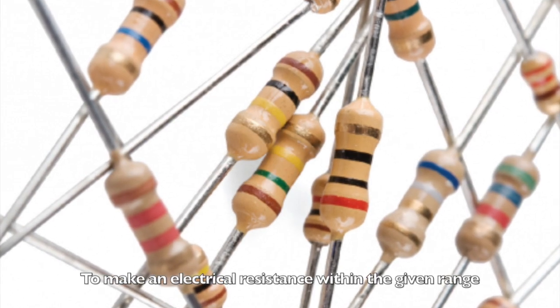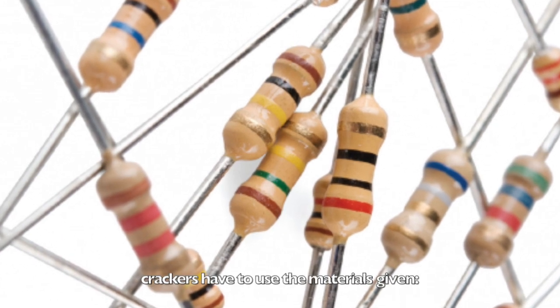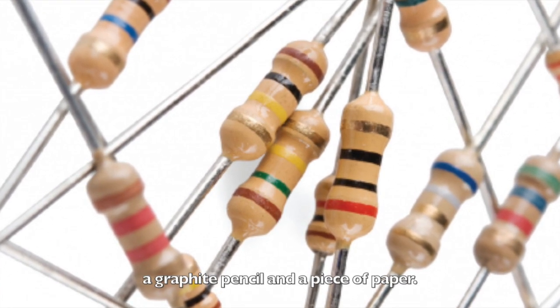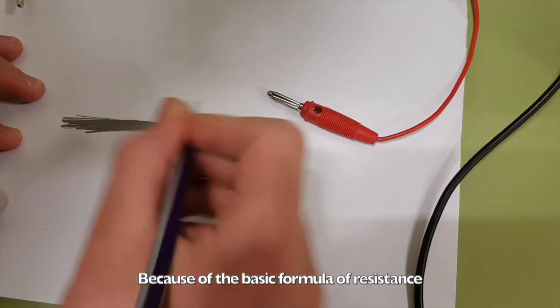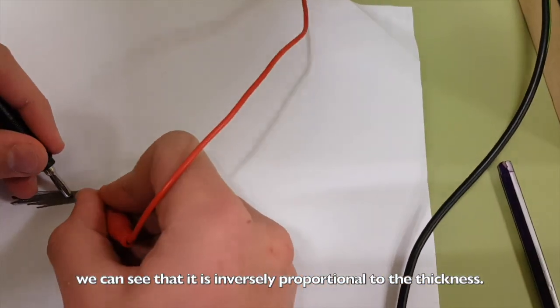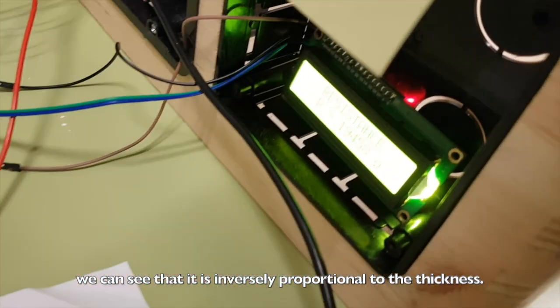To make an electrical resistance within the given range, you have to use the materials given: a graphite pencil and a piece of paper. Just draw a thicker line. Because of the basic formula of resistance, we can see that it is inversely proportional to the thickness.